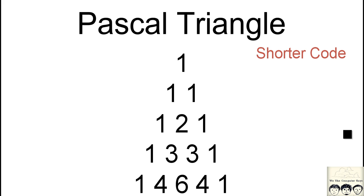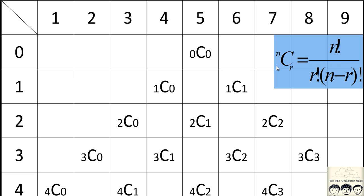This is how Pascal's Triangle looks, and we'll see how to derive it using the mathematical formula. I've built a grid showing how we arrange the elements of Pascal's Triangle. The formula we need is NCR — from permutations and combinations — which states that NCR equals N factorial divided by R factorial times (N minus R) factorial. Using this formula we will construct Pascal's Triangle.